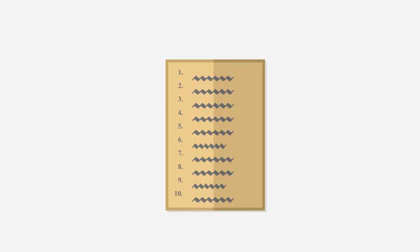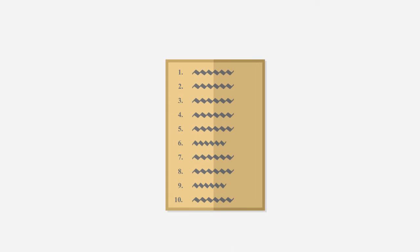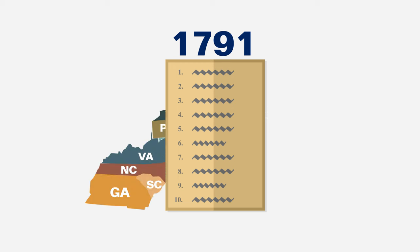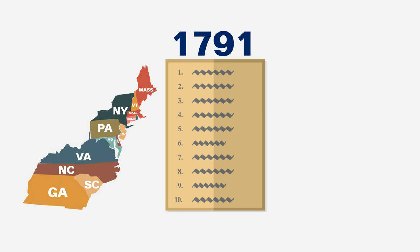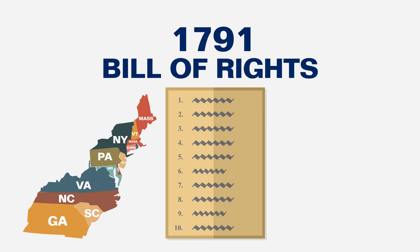Ten of the 12 amendments were quickly ratified, and by December 15, 1791, enough states had ratified to authorize the adding of this list, known as the Bill of Rights, to the Constitution.